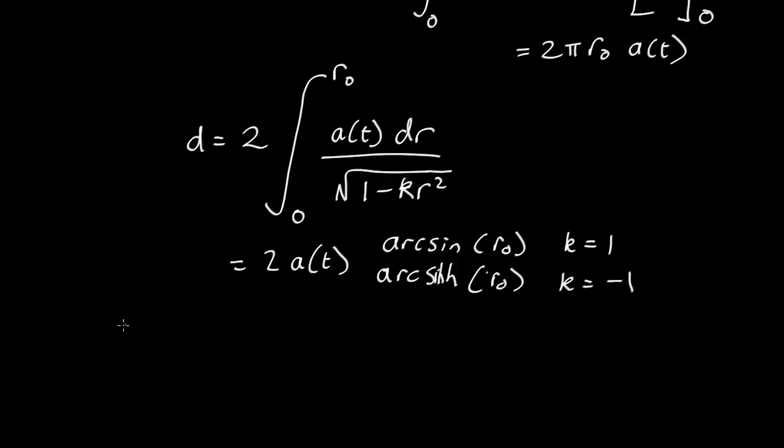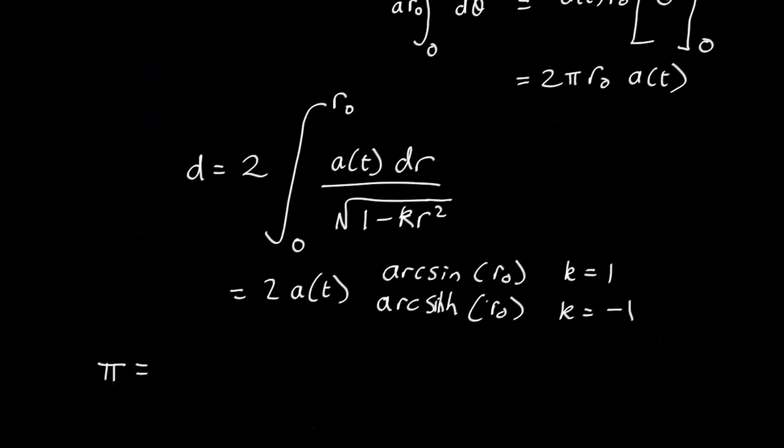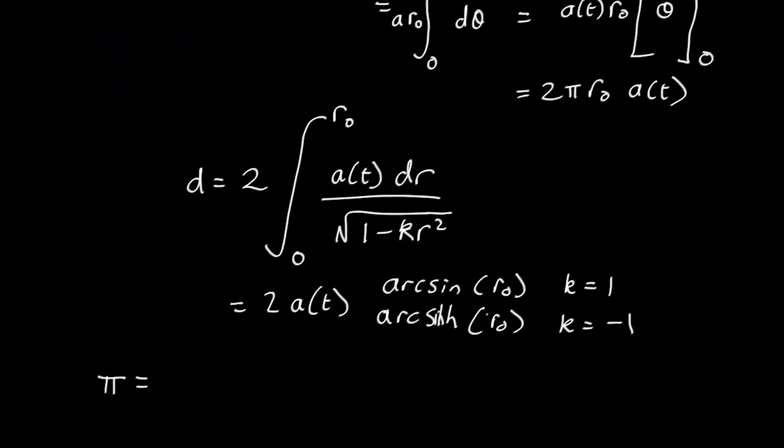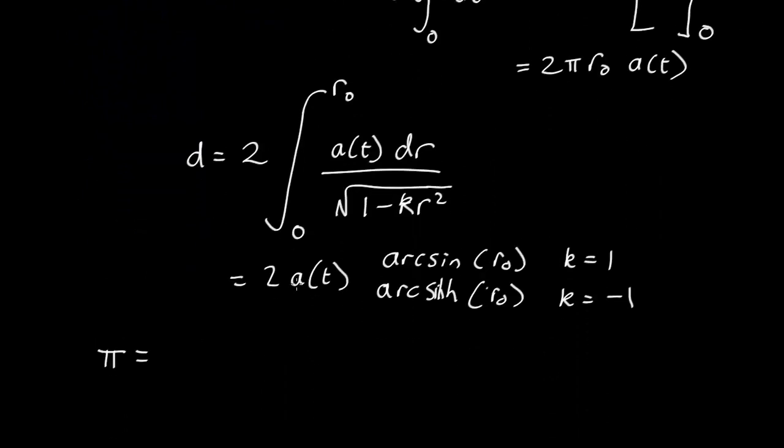So that's telling us that the value of pi in this universe, if you remember pi is c over d and c is 2 pi r0 a of t and d is this so the twos cancel so pi is pi naught, pi in our own universe, times r0 over either this arc sine or the arc hyperbolic sine of r0. So pi is not a constant it will change. How will it change?